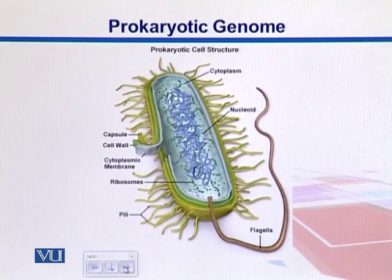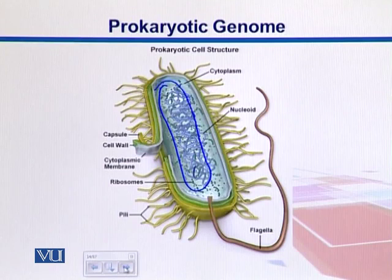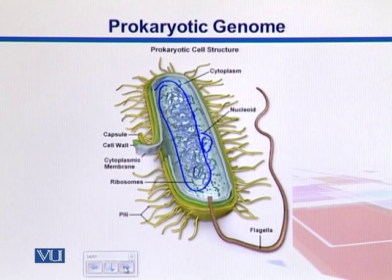Here in this diagram we see a prokaryotic cell, which is a bacteria. We have the genome — the DNA in the shape of a big chromosome in the middle — and ribosomes, small structures. Obviously protein synthesis is needed for every organism, so ribosomes are also there. We also have different layers of the cell wall.